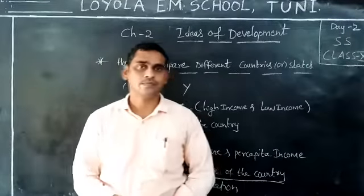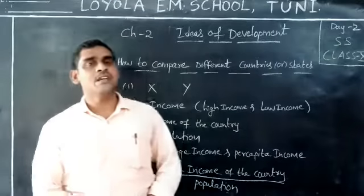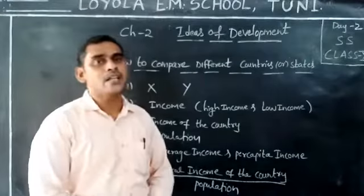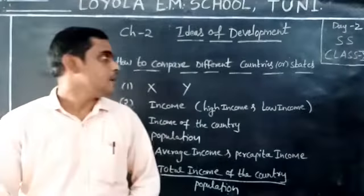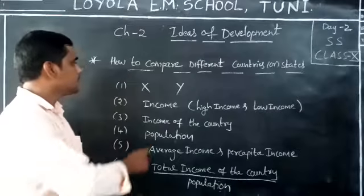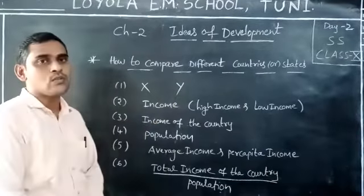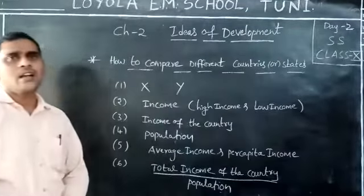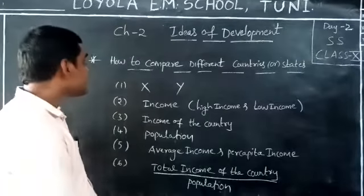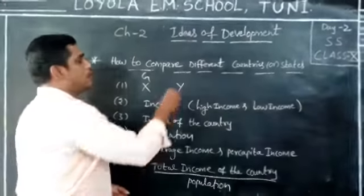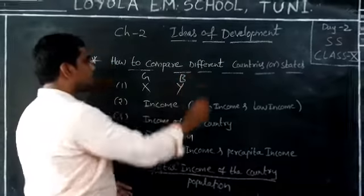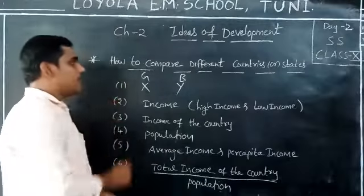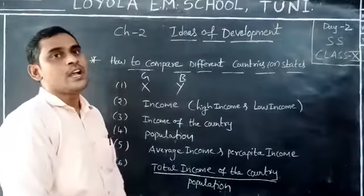Here you might ask: how can you say which countries are developed and which are not developed? When we say that countries or states are developed, we compare them in some aspects. Let me give one example. Consider two students — one student is X and one student is Y. Between the two students, X is the good student and Y is the bad student. How can you say that?